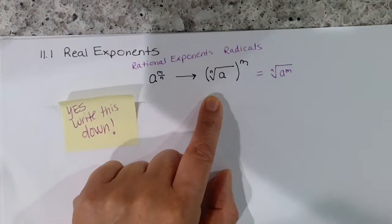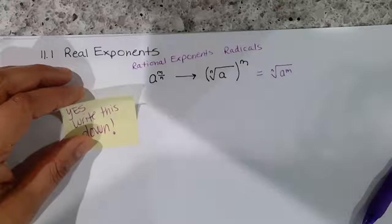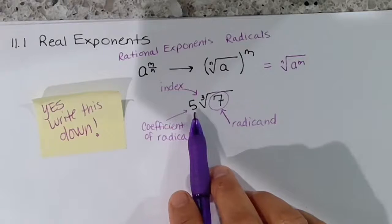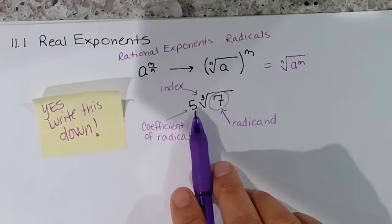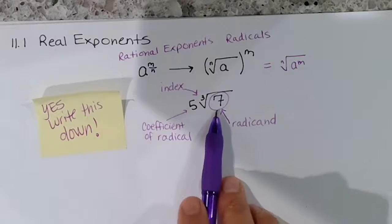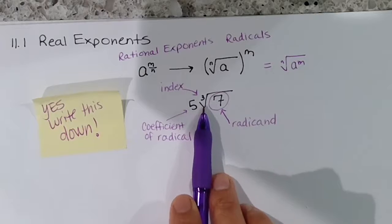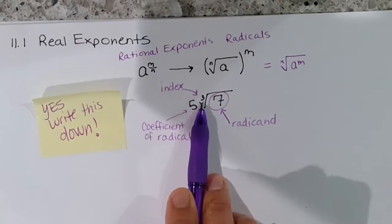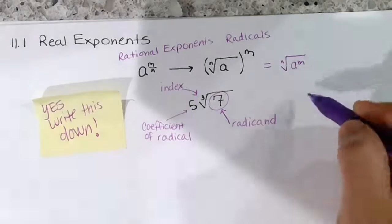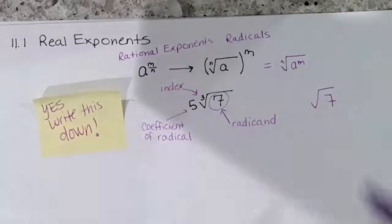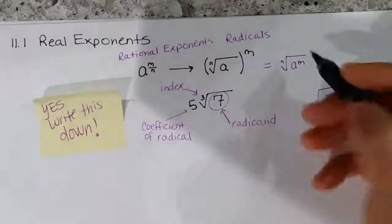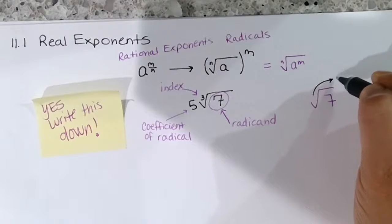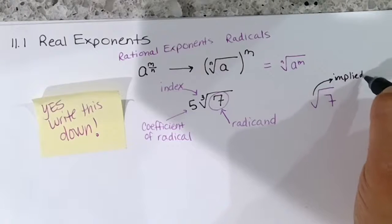Here are some vocabulary words you should know. Write this down. Take the expression: 5 times the third root of 7. This entire thing is the radical. The number under the radical sign is the radicand. The 5 is the coefficient of the radical. The small number indicating the root is called the index number. If there is no index number written, it's an implied 2 — meaning it's the square root.